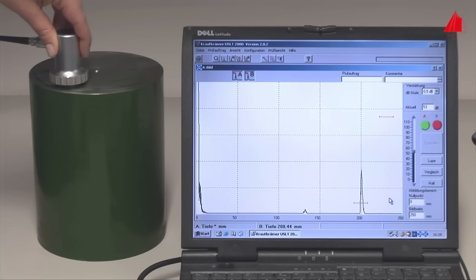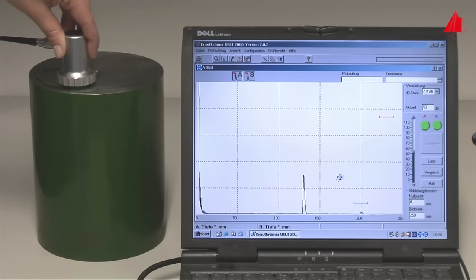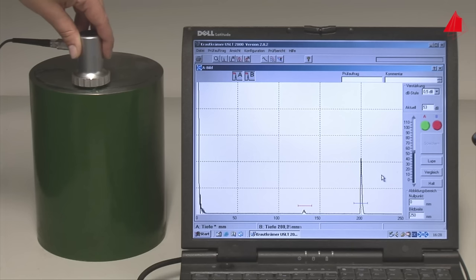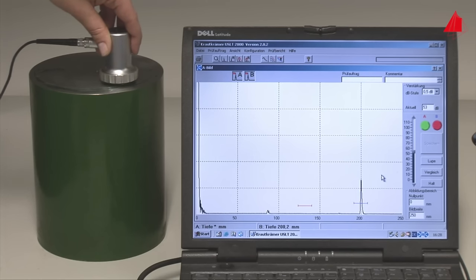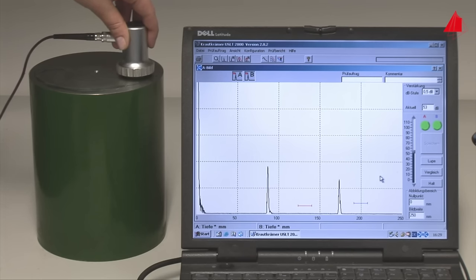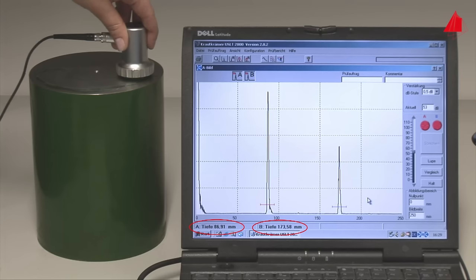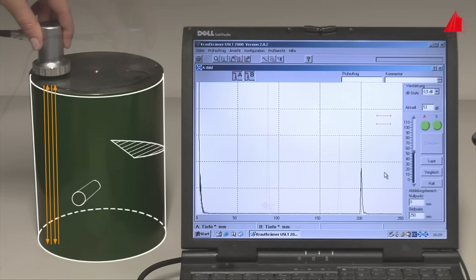A defect echo appears on the monitor. This defect is located in a depth of 130 millimeters below the surface. Another echo indicates a defect in a depth of 87 millimeters. The second smaller echo at 174 millimeters is caused by double reflection on the same imperfection.